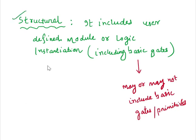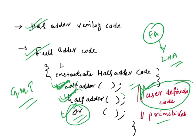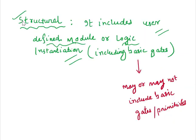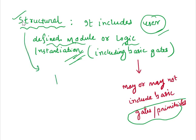What is structural modeling? Structural modeling includes user-defined modules, also called logic instantiation. Structural modeling may or may not include primitives, but it must include at least one user-defined module or logic instantiation.